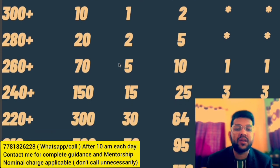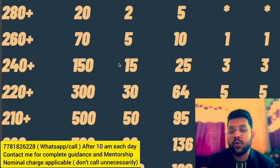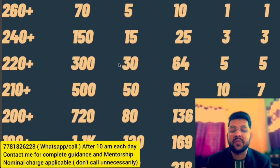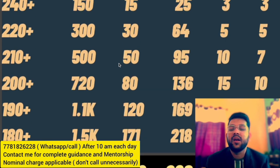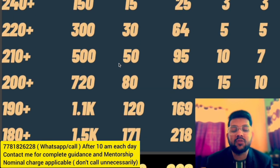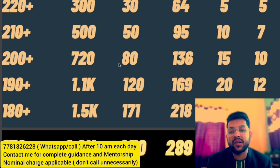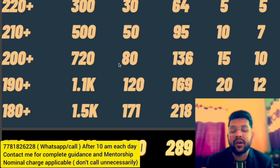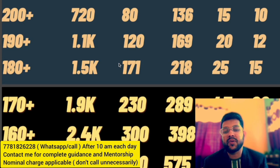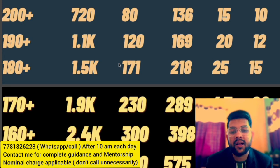For 220 plus: General 300, EWS 40, OBC 64, SC 5, ST 5 respectively. For 210 plus: General 500, EWS 395, OBC 10, ST 7. For 200 plus: General 720, EWS 80, OBC 136, SC 15, ST 10. For 190 plus: General 1,100, EWS 120, OBC 169, SC 40, ST 12-40. For 180 plus: General CRL around 1,500, EWS 171, OBC 218, SC 25, ST 15.